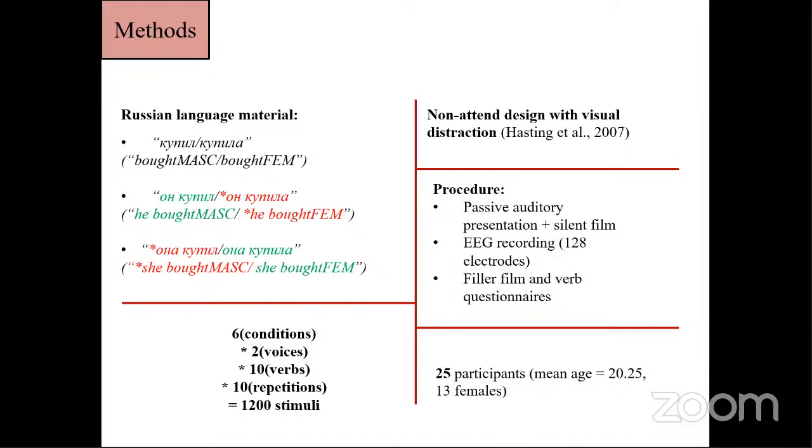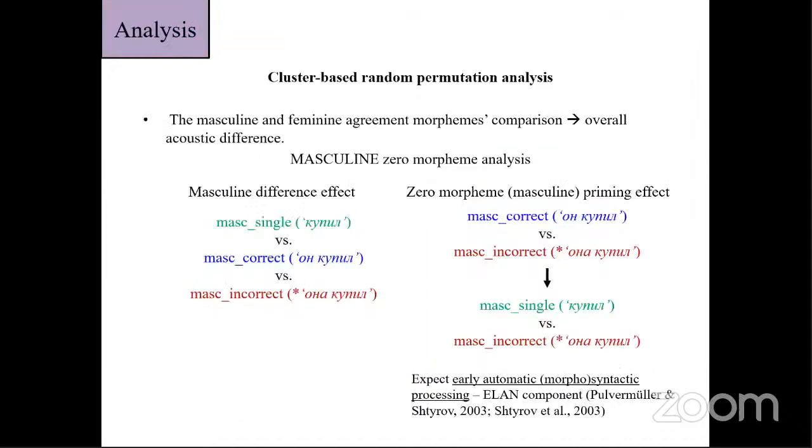These phrases and single verb forms are recorded in two voices and were made of ten different verbs, and we repeat them ten times so each participant heard one thousand two hundred trials. We used non-attend design with visual distraction. The procedure looked like a passive auditory presentation of the discussed stimuli and silent film as a distractor, during which we recorded EEG activity from 128 electrodes. Twenty-five participants took part in the experiments.